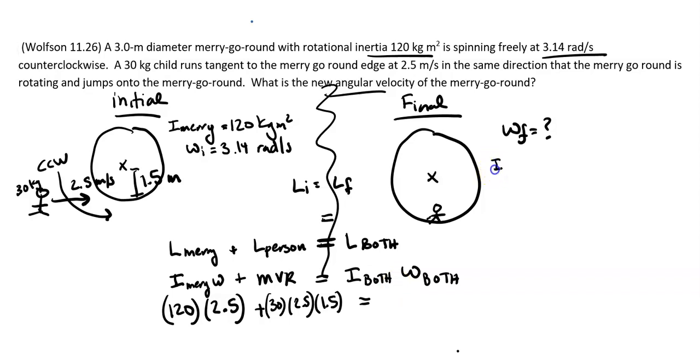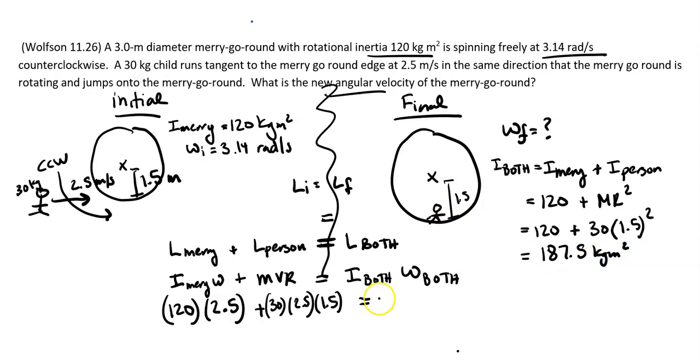Cool, I of both—they are together afterwards, so let's think about what that is. We're going to have I of the merry-go-round plus I of the person. Merry-go-round we already know is 120 kilogram meter squared. The person is just a point mass on the edge, so I can call that mr squared. So we have 120 plus—mass of the kid is 30, radius is 1.5. So I got 187.5 kilogram meter squared for the moment of inertia of both of them afterwards. Let's plug that in: 187.5 times omega of both.